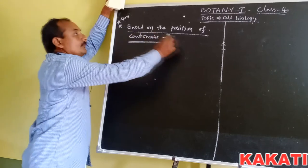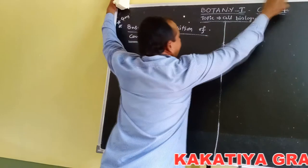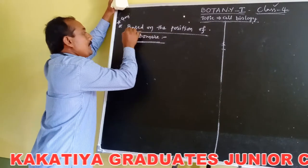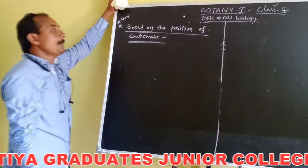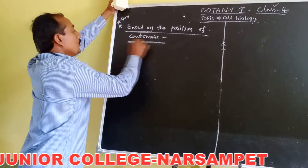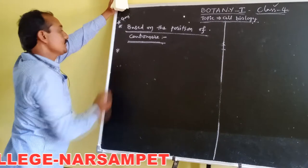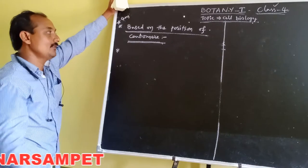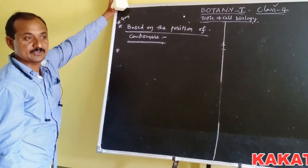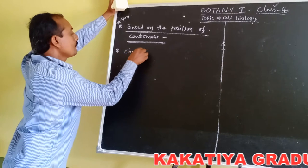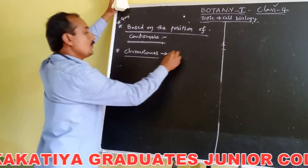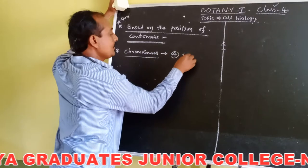Hi students, today class 4 the topic is cell biology. A very important 4 marks question: how chromosomes are classified based on the position of the centromere. Based on the centromere position, chromosomes are divided into four types.